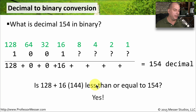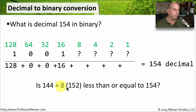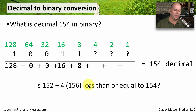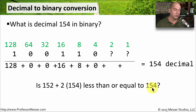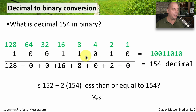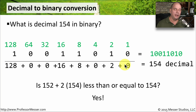Now we're up to 144. Is 144 plus 8 less than or equal to 154? It is — that's 152 — so we add a 1 and bring that 8 down. Now we've got 152. Is 152 plus 4 less than or equal to 154? That's 156, which is not less than or equal to 154, so a 0. Is 152 plus 2 less than or equal to 154? That's exactly 154, so yes — that's a 1. And there's nothing left, so we bring a 0 down at the 1 place. Our binary number for 154 is 10011010. We've taken 154 in decimal and converted it to binary using simple addition.